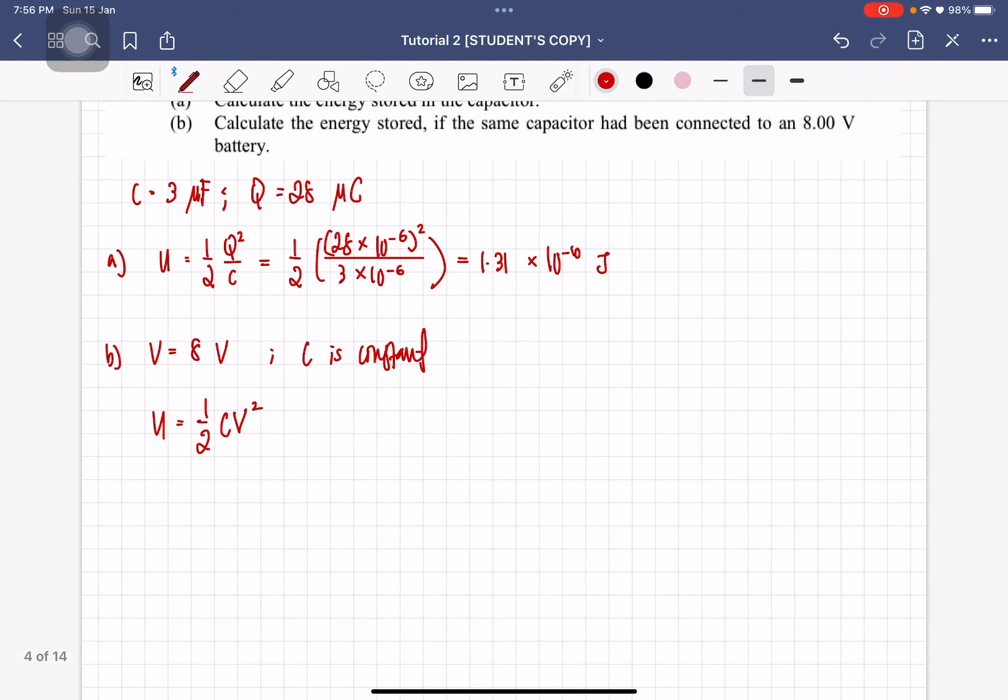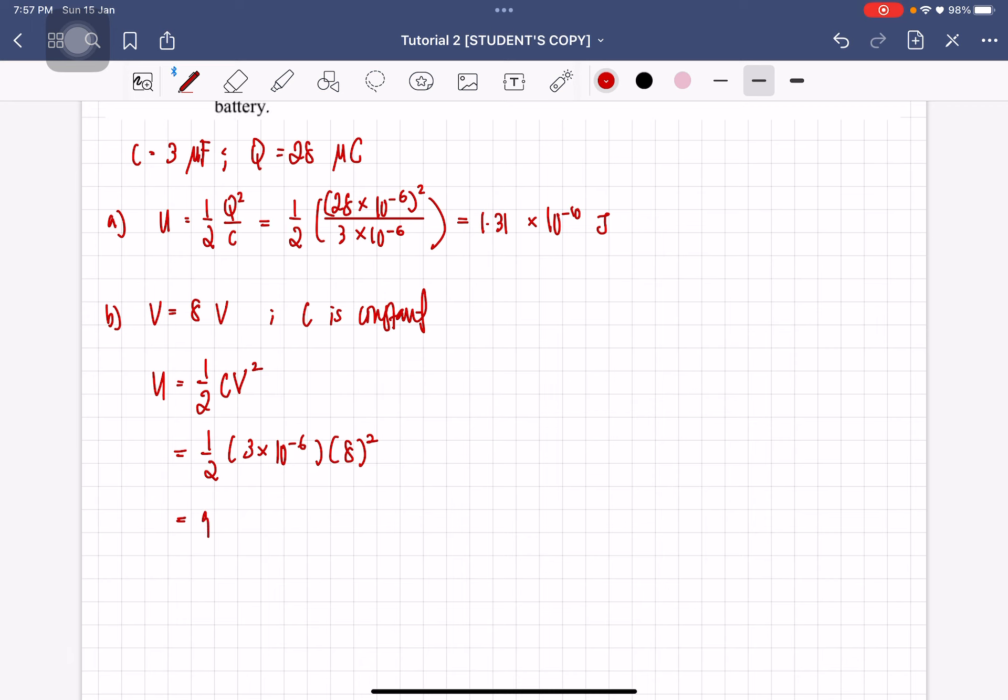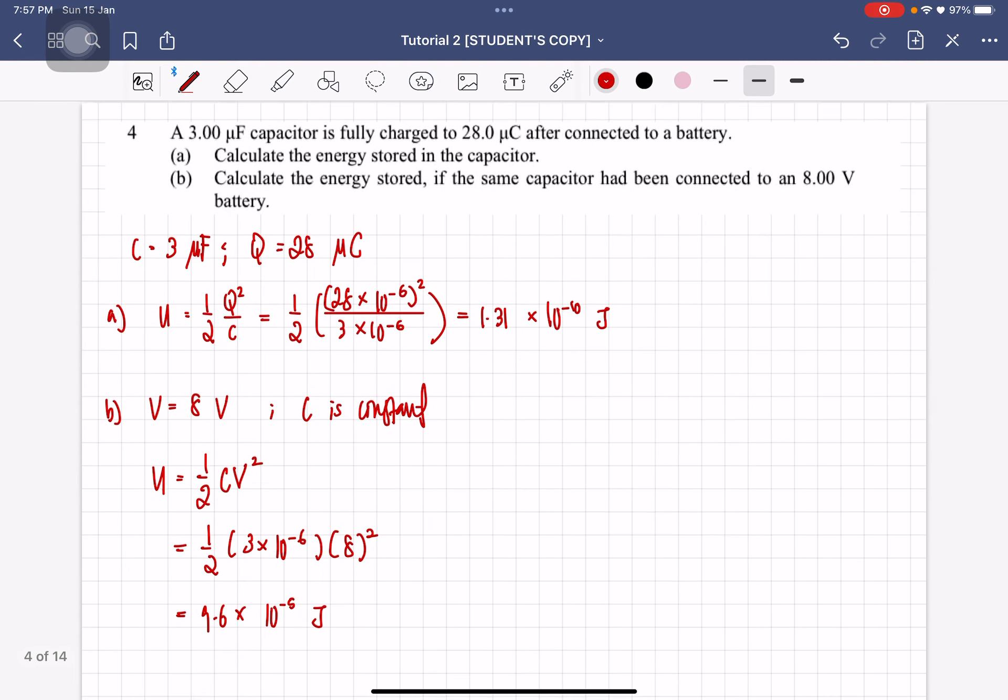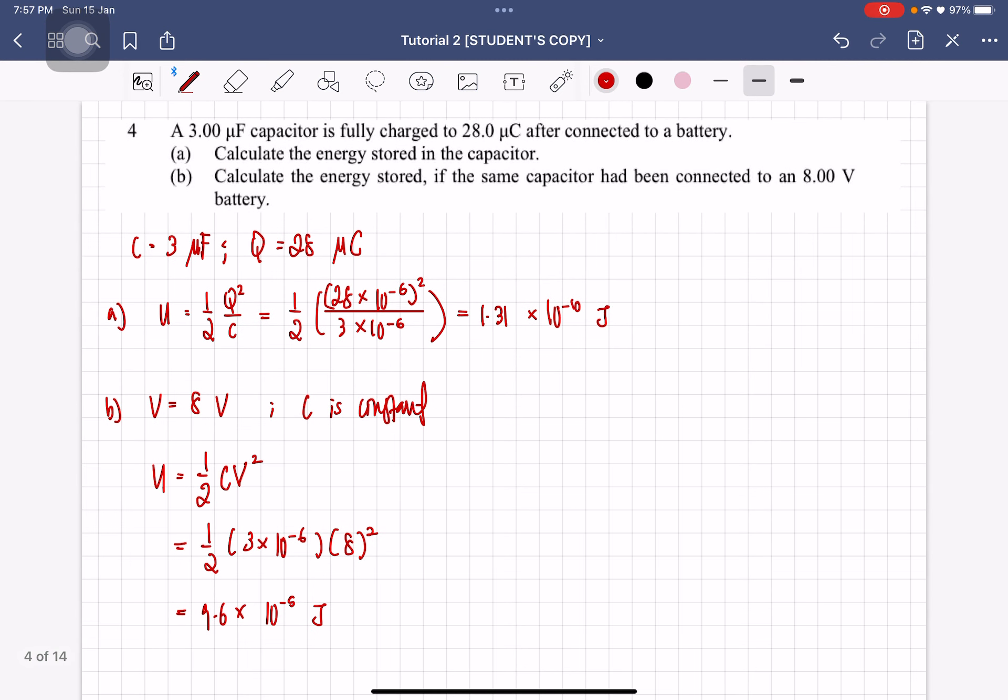Okay, so now we are going to use half C V squared. C is the one that's been given which is 3 µF and V is the new voltage which is 8 volt, which will then give you the answer 9.6 × 10^-5 joule. Or 96 µJ, whichever suits you best. But that is the solution for question number 4.